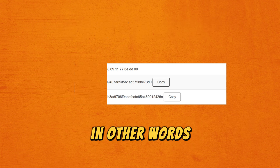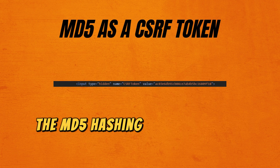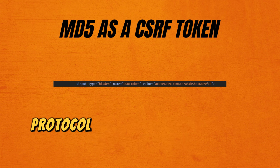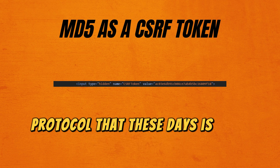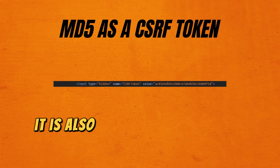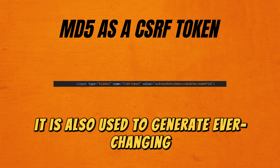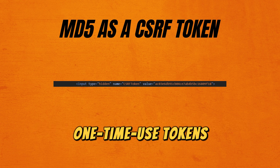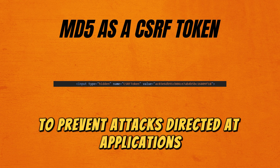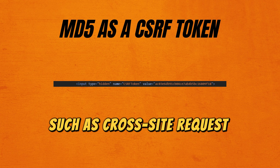In other words, the MD5 hashing algorithm is a cryptographic protocol that these days is used as a checksum, and sometimes it is also used to generate ever-changing one-time-use tokens to prevent attacks such as cross-site request forgery.